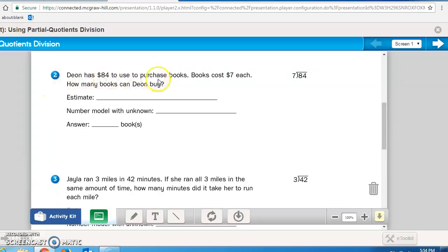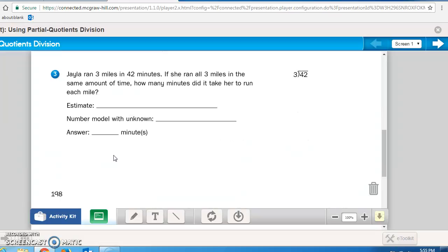Problem 2 says, Dion has $84 to use to purchase books. Books cost $7 each. How many books can Dion buy? Remember, your problem is set up right over here, the division, so if it's easier for you to write your number model with the unknown first, then write your estimate, and then figure your answer. Pause the recording now and do number 2, but turn it on if you need to hear number 3 read to you. And number 3 reads, Jayla ran 3 miles in 42 minutes. If she ran all 3 miles in the same amount of time, how many minutes did it take her to run each mile? Again, they set the problem right up over here for you, so you need to write the number model with the unknown, do your estimate, and then write the answer to the problems in the space provided. Please pause the recording now, finish math journal page 198, bring it back to me to check it for you so I can check it off as an assessment check-in.